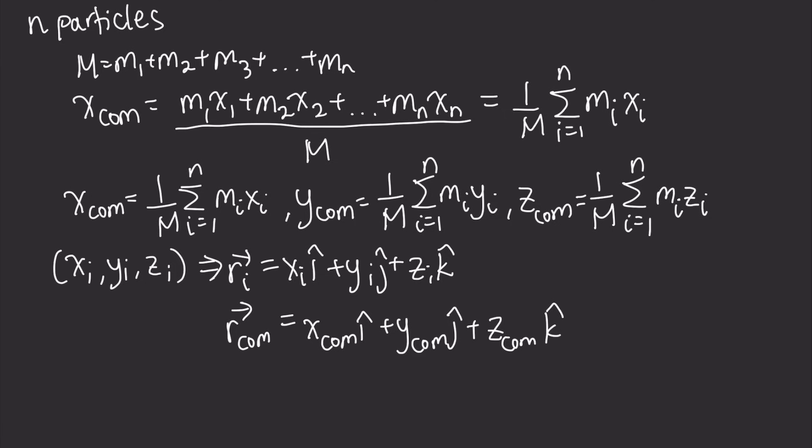So now, if we can write it more concisely, we get that this equals 1 over M times the sum of all of the masses multiplied by their respective position vectors. And that is how we get the representation of the center of mass in vector notation.